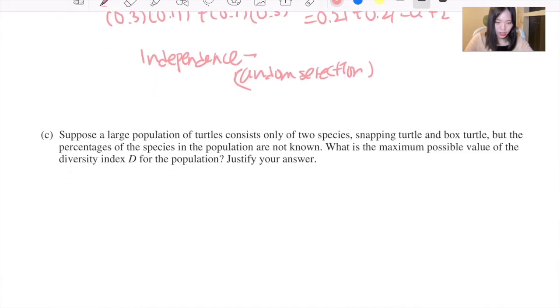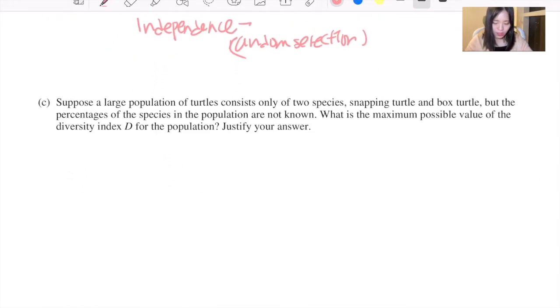Part C: Suppose a large population of turtles consists only of two species, snapping turtle and box turtle, but the percentages of the species in the population are not known. What is the maximum possible value of the diversity index D for the population? Justify your answer.